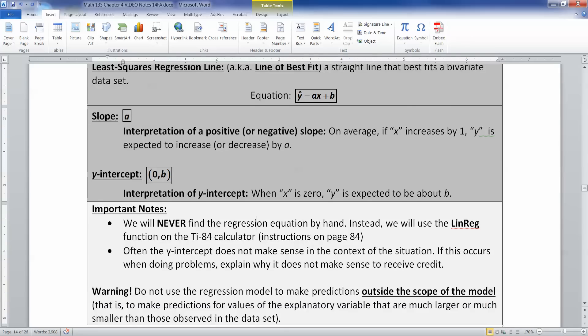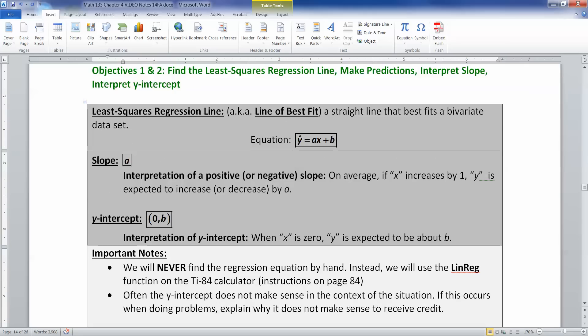All right. So some important notes about this. One, we will never, never, never find this equation by hand in this course. It's a difficult calculation, and it's basically outside the scope of what we want to handle here. We're going to use linear regression from the TI-84 calculator. The same linear regression that we already used to find the correlation coefficient. Second important note is that often the y-intercept doesn't actually make sense of the context of the situation. If that occurs when doing the problems, explain why it doesn't make sense in order to receive credit for it. So if it makes no sense, talk about it. Why doesn't it make any sense?